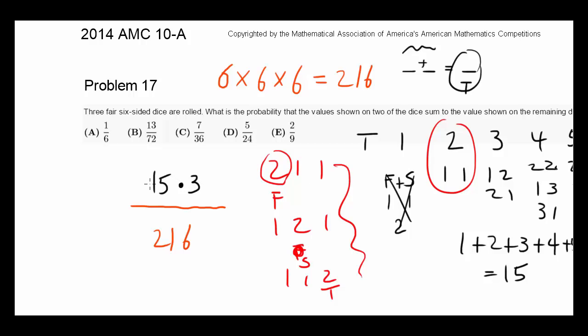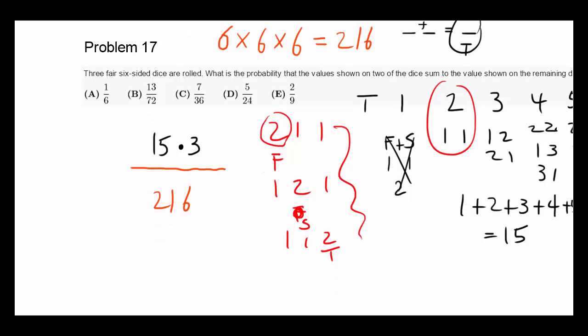So the actual probability is going to be three times fifteen over 216. Now what's this going to be? That's going to give us 45 over 216, which simplifies to five over twenty-four, which is answer choice D.